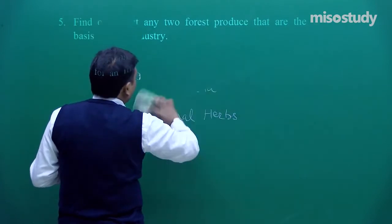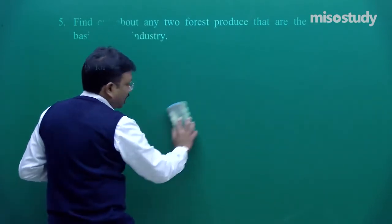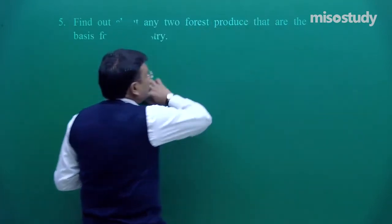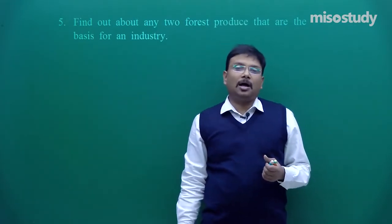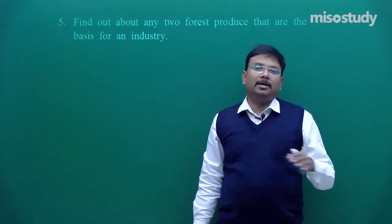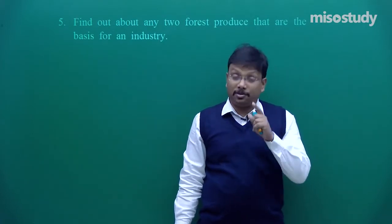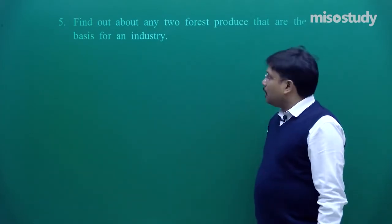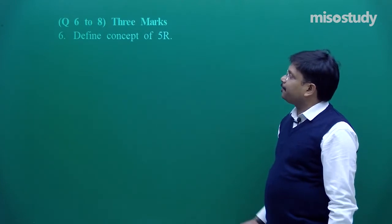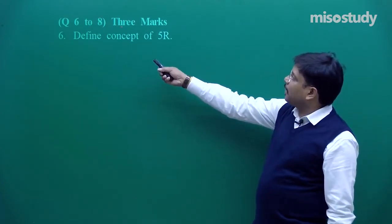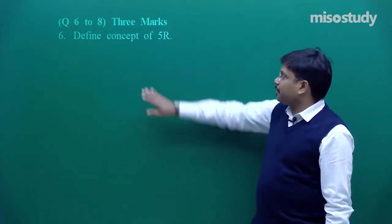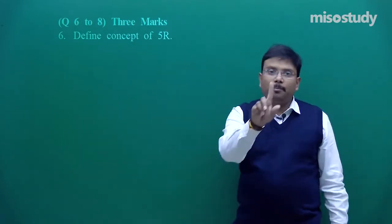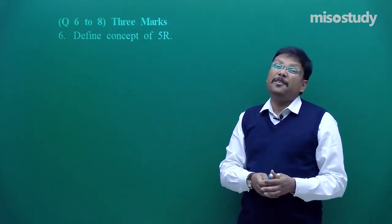Our demand is increasing day by day and the supply of these materials from the forest is limited, because we human beings are cutting, eradicating, and removing the green cover sharply — that is not a good thing. After that come questions 6, 7, and 8 — these are 3-mark questions. Question 6 is something on which I devoted one complete video: the 5 R's.